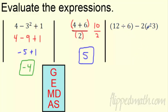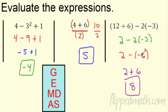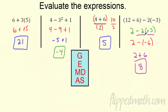Here we have a grouping sign — parentheses. Inside, 12 divided by 6 is 2, and once we clean that up, the parentheses are gone. Now we have 2 minus 2 times negative 3. Two times negative 3 is negative 6, and minus a negative becomes plus 6. So 2 plus 6 is 8. You can think of it as negative 2 times negative 3 equals positive 6 — I hate double signs.